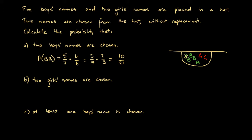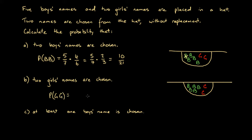Now let's look at Part B: find the probability that two girls' names are chosen. Drawing our hat again with five boys in green and two girls in red, we want the probability of girl and then another girl. There are seven names and two of them are girls, so the probability that a girl is chosen on the first try is two over seven.